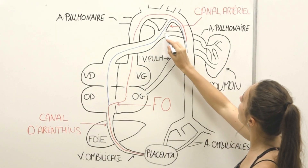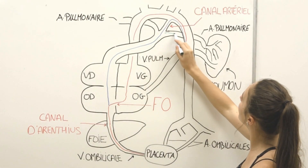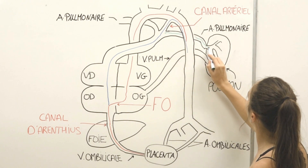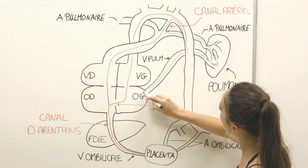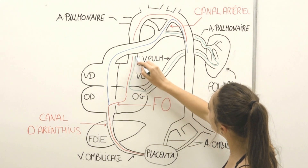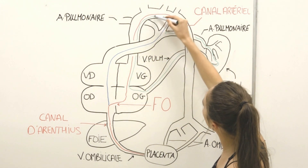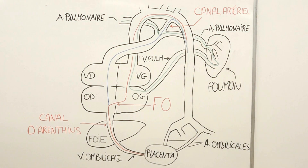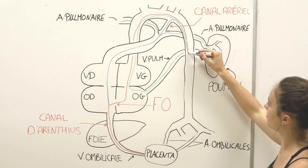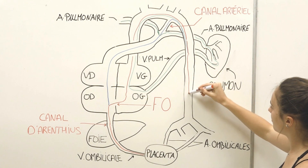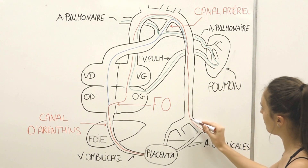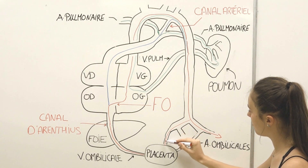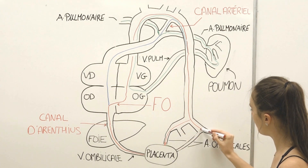L'infime partie de sang restante suivra un trajet classique en passant par les poumons, avant de rejoindre l'oreillette gauche, puis le ventricule gauche, pour finir par être expulsée dans la crosse aortique. À partir de l'aorte, le sang ira irriguer les différents organes, puis retournera au placenta en empruntant les deux artères ombilicales, naissant des artères iliaques primitives.